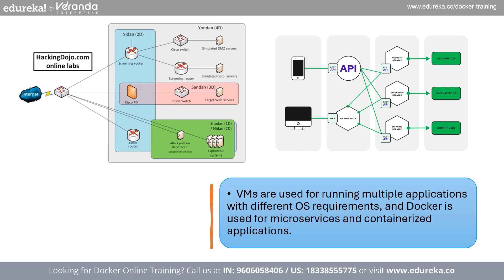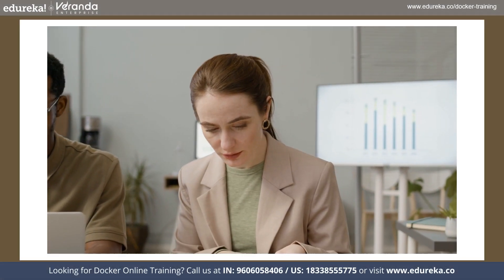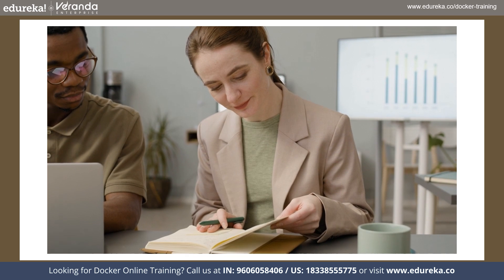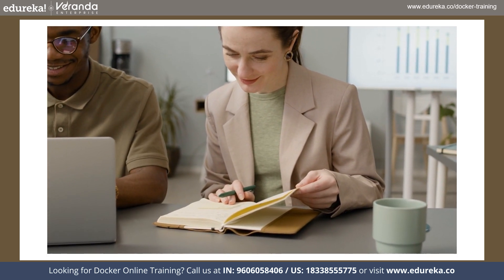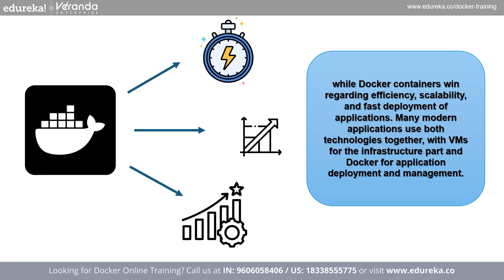Virtual machines are used for running multiple applications with different OS requirements, while Docker is used for microservices and containerized applications. In summary, the choice between Docker and virtual machines depends on the particular needs of your application and environment. Virtual machines are better when strong isolation or multiple OS instances are required, while Docker containers excel at efficiency, scalability, and fast deployment. Many modern applications use both technologies together — virtual machines for infrastructure and Docker for application deployment and management.